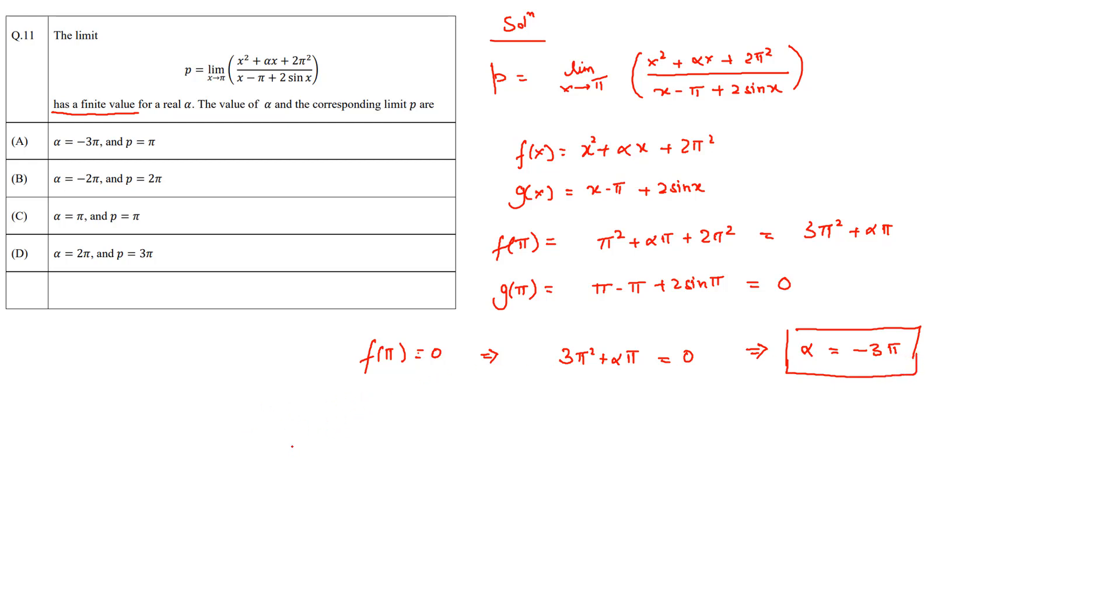Once we know alpha, we move on to finding the limit or the value of p, which will now be equal to limit x tending to pi of (x squared minus 3 pi x plus 2 pi squared) divided by (x minus pi plus 2 sin x), where I have substituted alpha to be minus 3 pi.